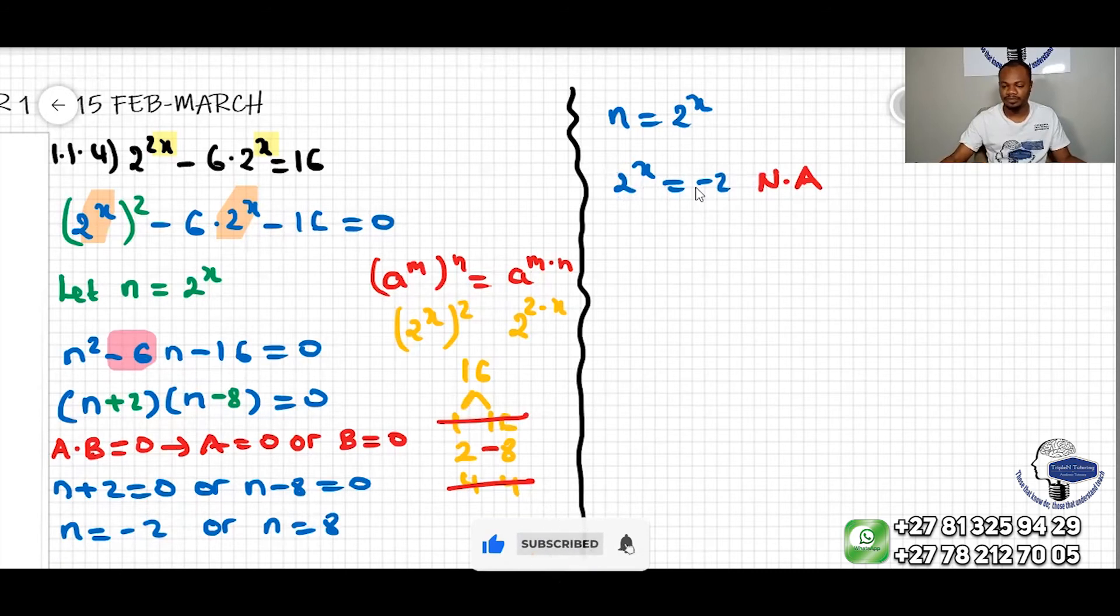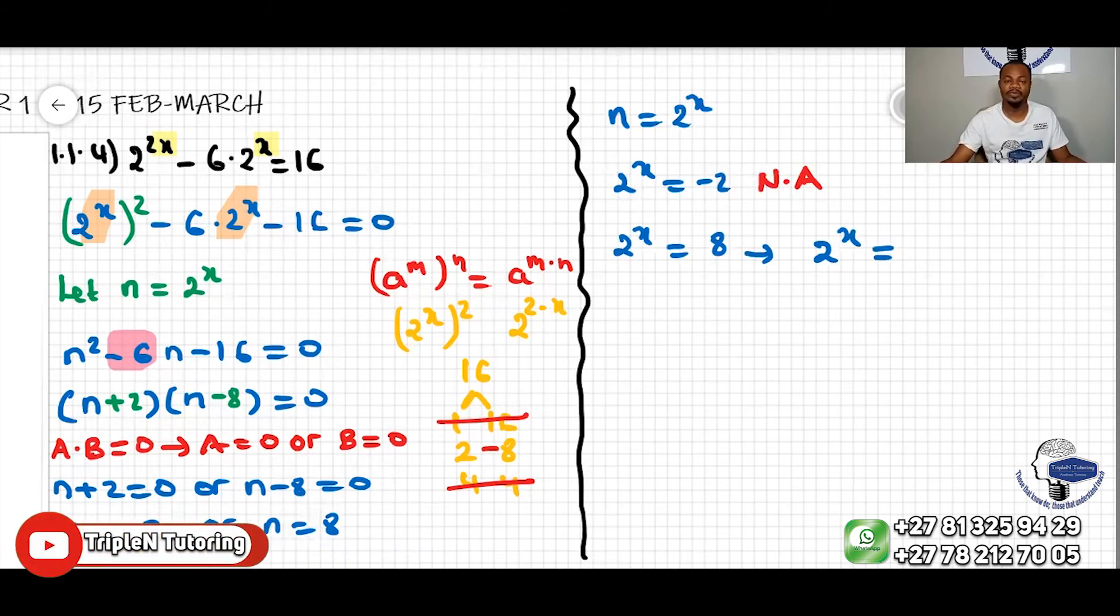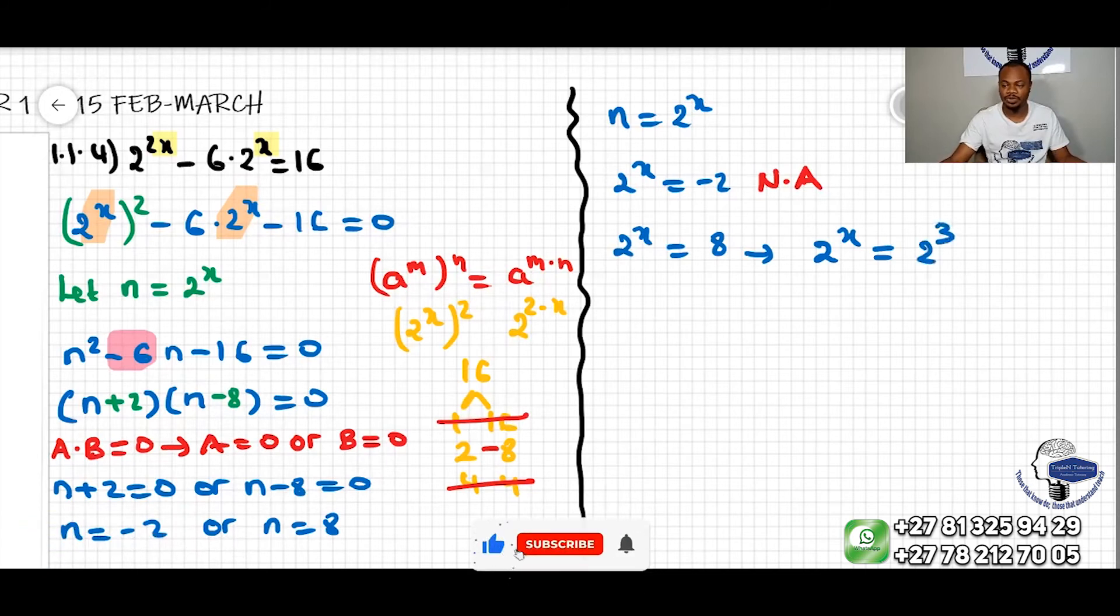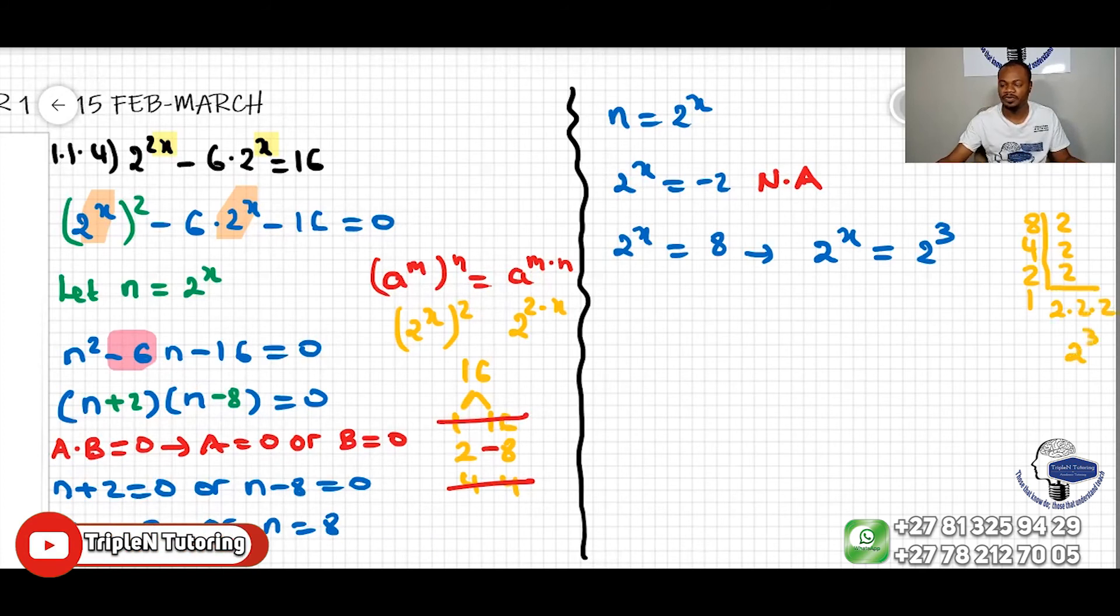Now, for the other case, we have 2 to the x equal to 8. Then this means what? Remember, we can write 2 to the x equal to 8 in terms of its prime factors. 8 is like 2 to the power of 3. If you're not sure, you do the factor tree. It's like 8 divide by 2 is 4, by 2 is 2, by 2 is 1. And then we have 2 times 2 times 2, which is equal to 2 to the power of 3. That's the reason why we say 2 to the power of 3.